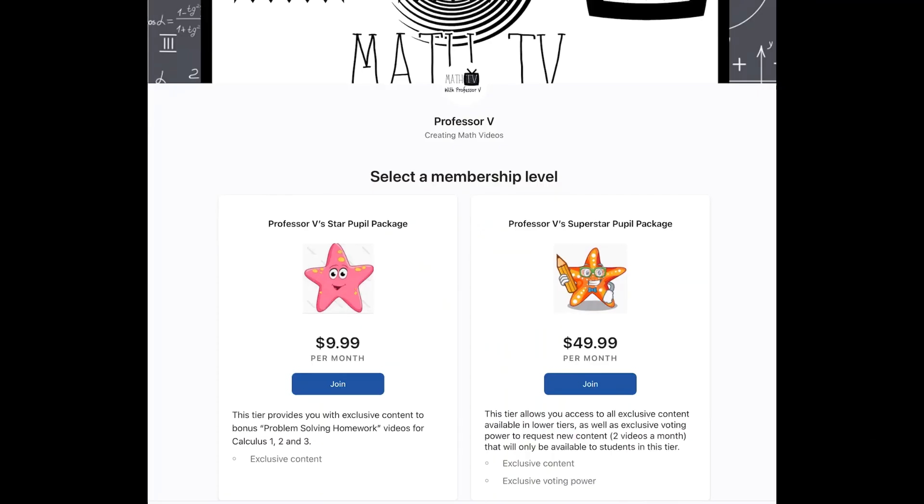To see the full length video, you'll need to join my Patreon. There's two memberships for just $9.99 a month. You can have access to all of the exclusive video content I create. And if you would like some voting power to request what content in particular, then you can join the superstar pupil package for $49.99 a month. Happy studying.